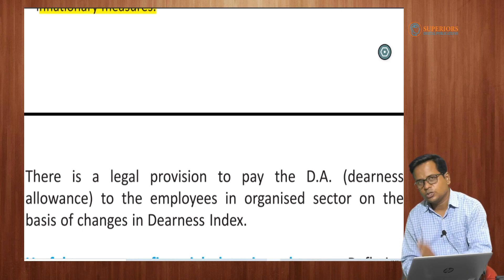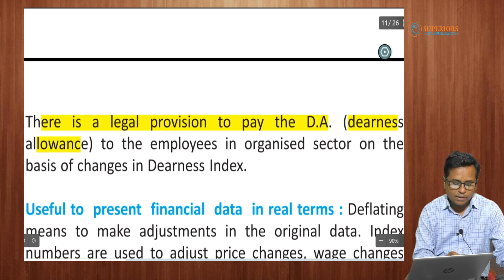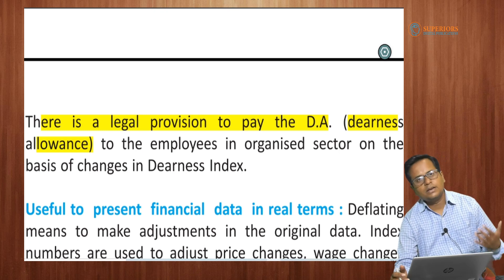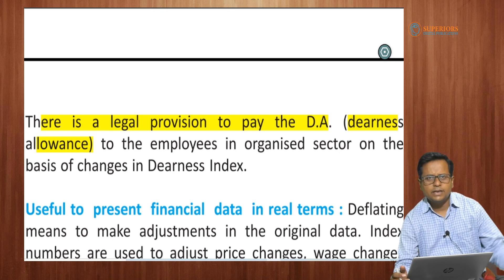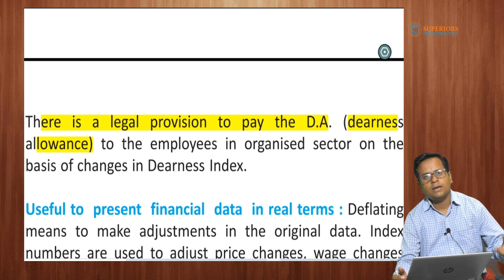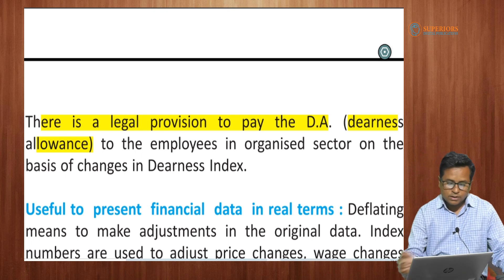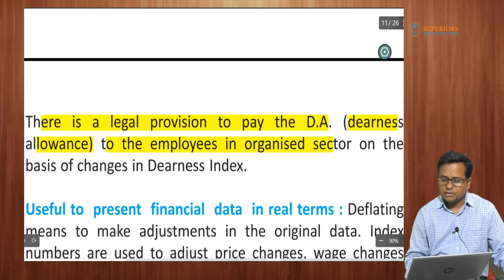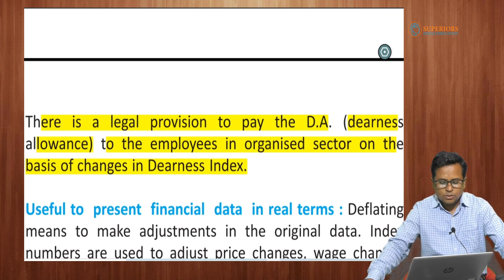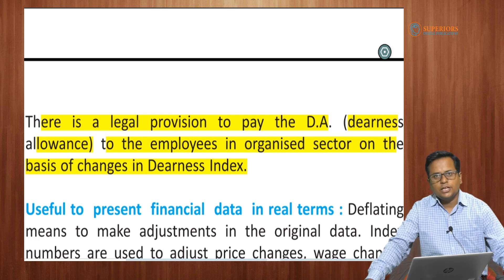There is a legal provision to pay a dearness allowance. When inflation occurs and prices rise, a dearness allowance is given to government employees to help them cope with the rising cost of living. This is designed for the organized sector of the economic system, and there are many other measures which can be taken according to inflation in the economic system.